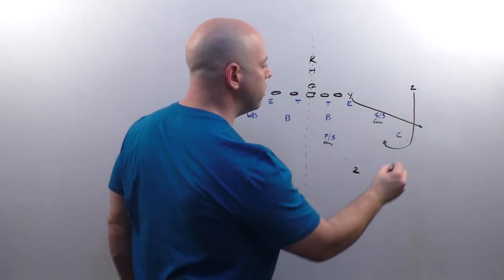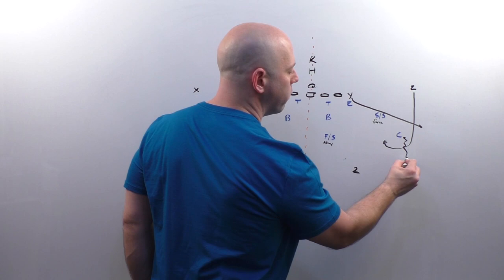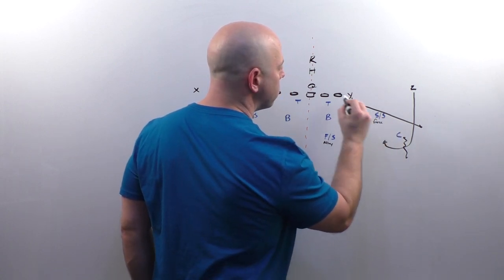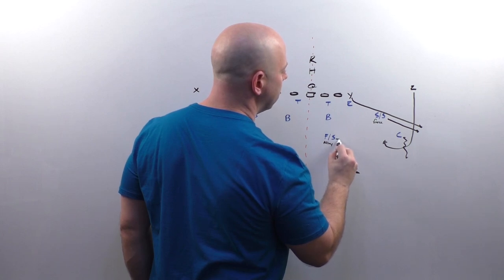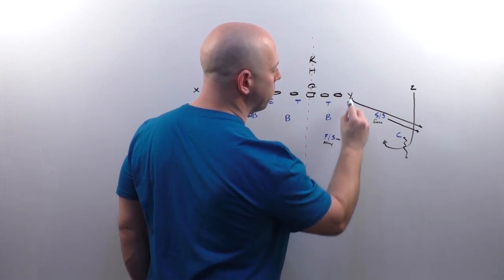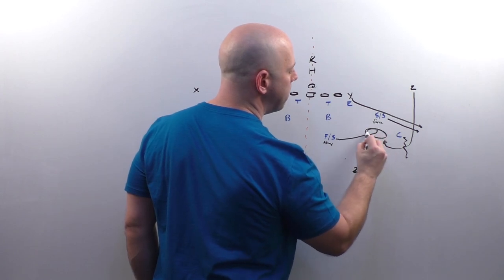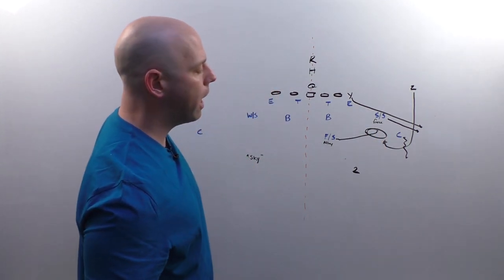We know right now, this is where robber comes in. Our corner's going to be over top. Our strong safety will have the flat. And our free safety doesn't get a vertical by number two, the Y.